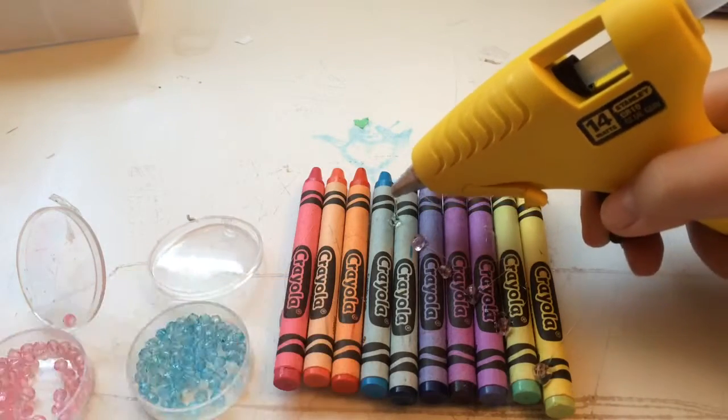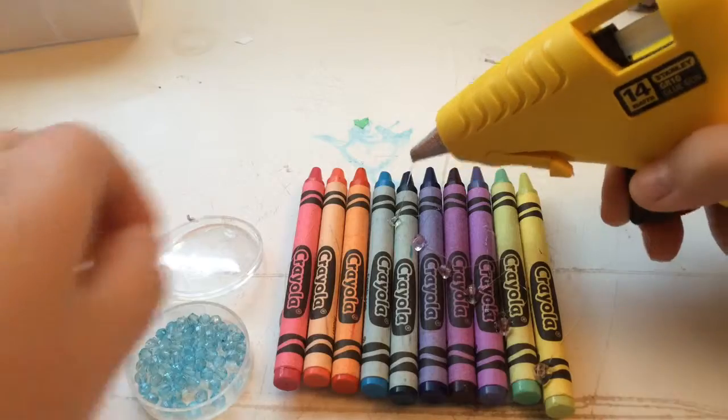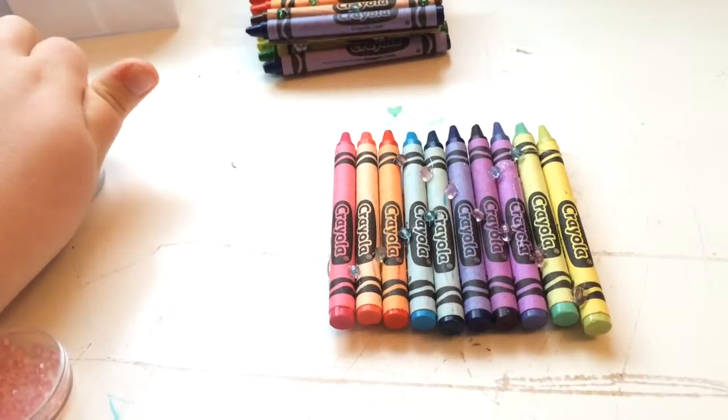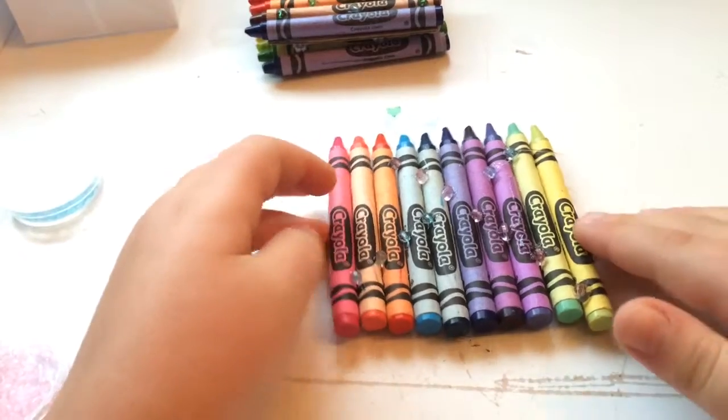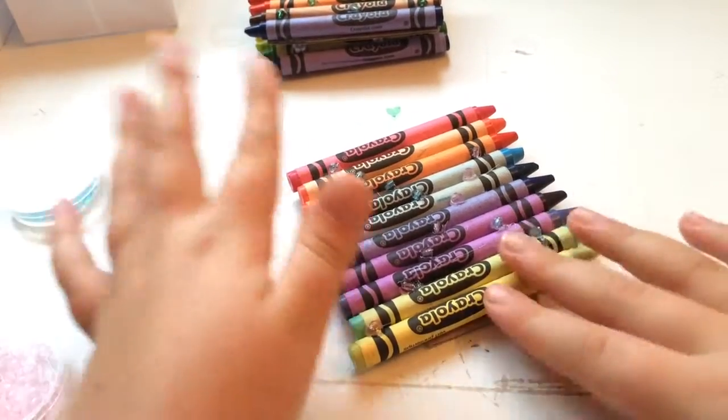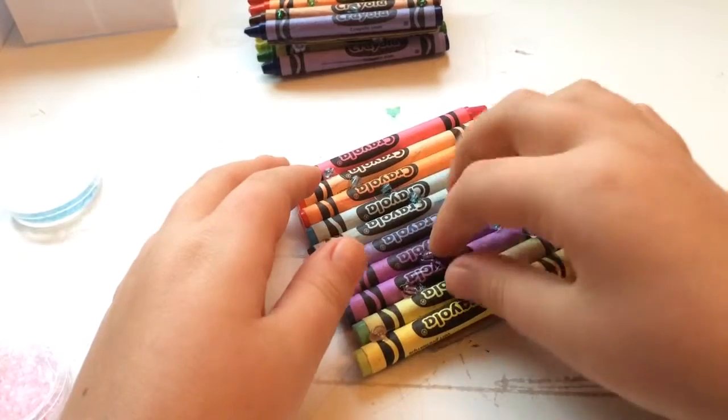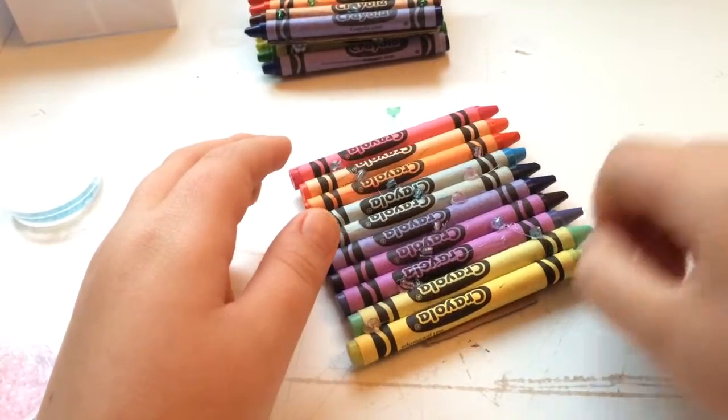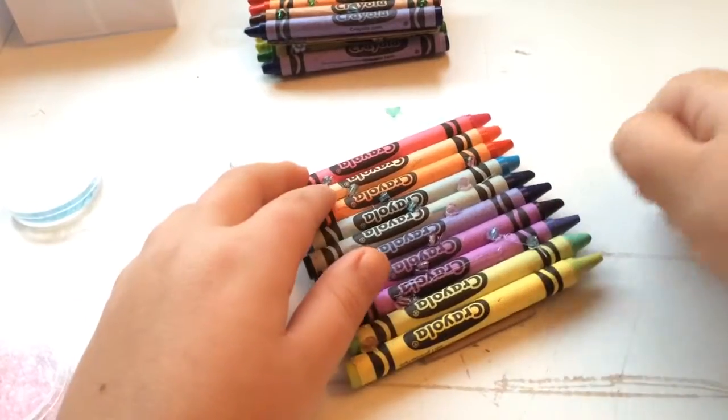So I hot glued all my rest of the beads on that I wanted to use for decoration. Then you're going to probably just want to pull off these extra little glue, hot glue strings to make it look prettier.